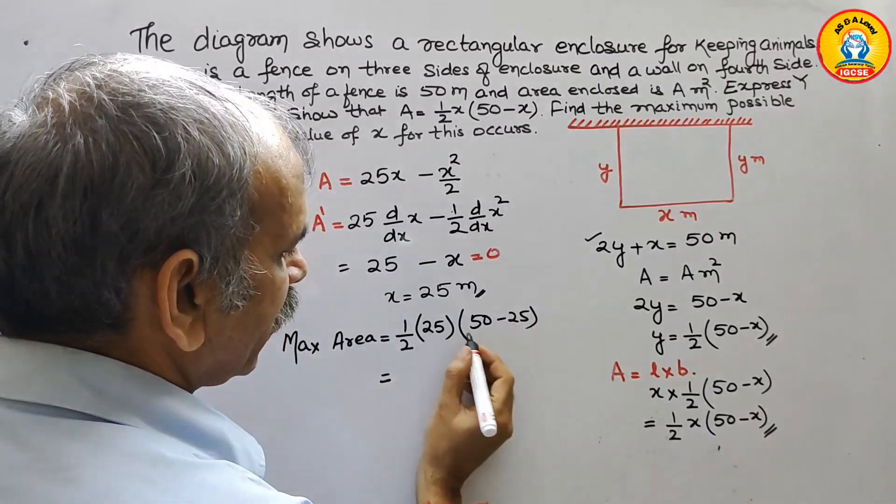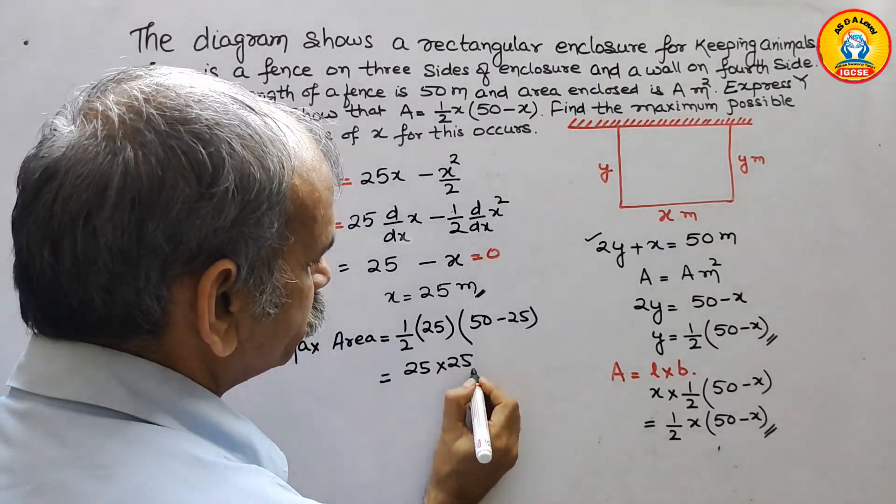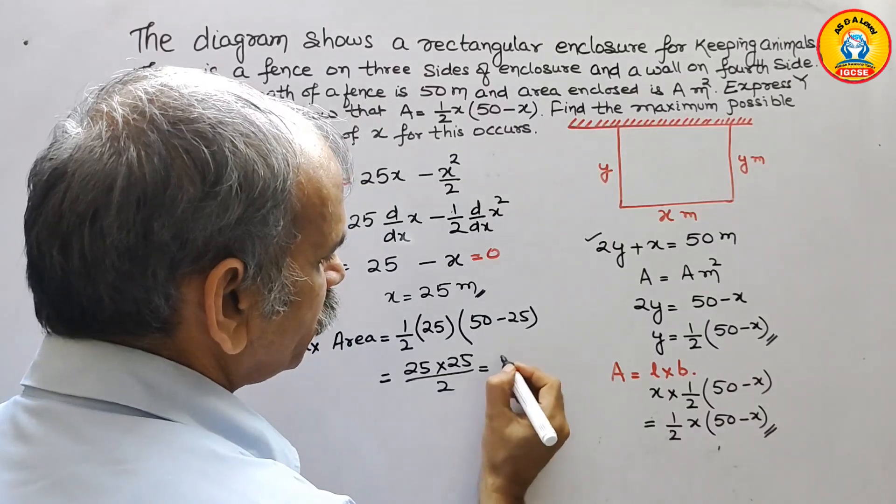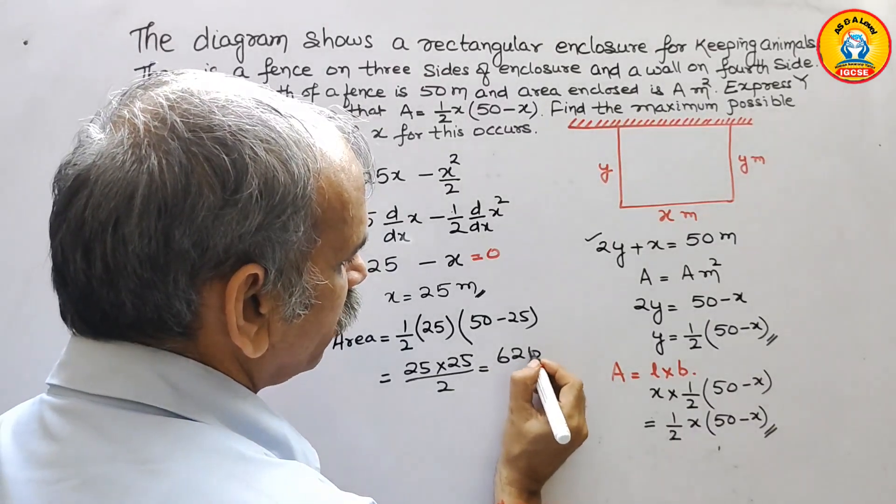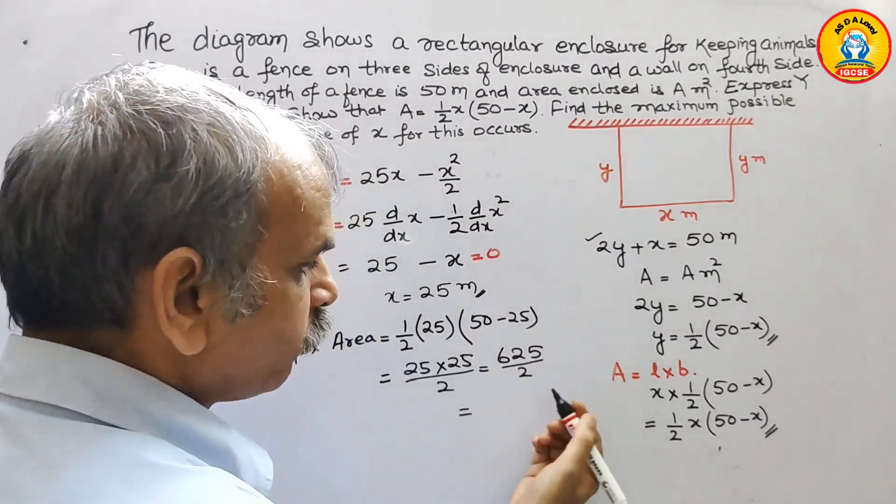That is equal to we can say 25 into 25 by 2. This is equal to we can say 625 by 2. So now just divided by 2, what we will get?